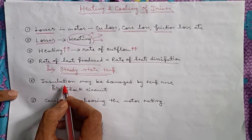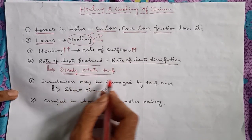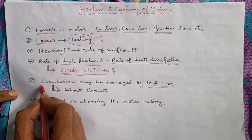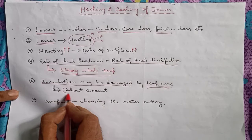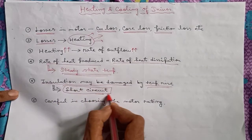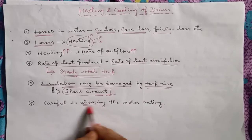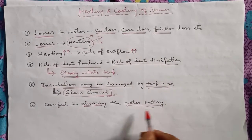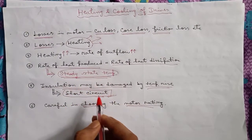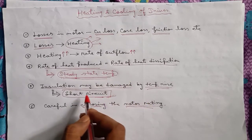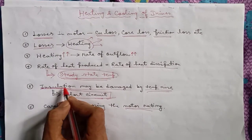Now, in a machine there are various insulations used in windings. This temperature rise may damage those insulations. If the insulation damages, it can lead to short circuit. Therefore an engineer should carefully choose the motor rating for a specific application, keeping in mind this temperature rise so that the temperature rise does not exceed the permissible value of temperature for the insulation.